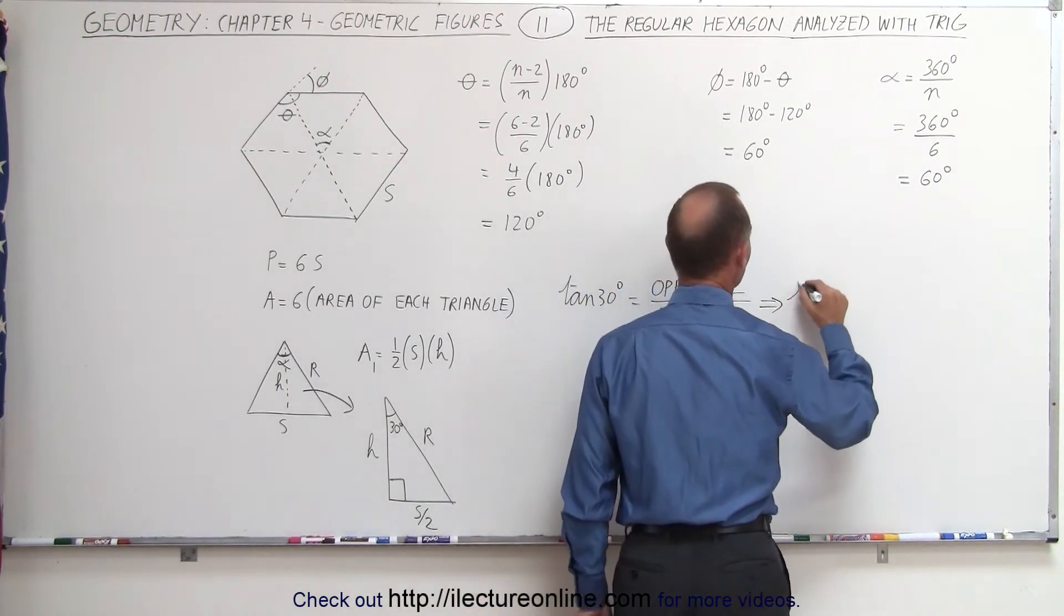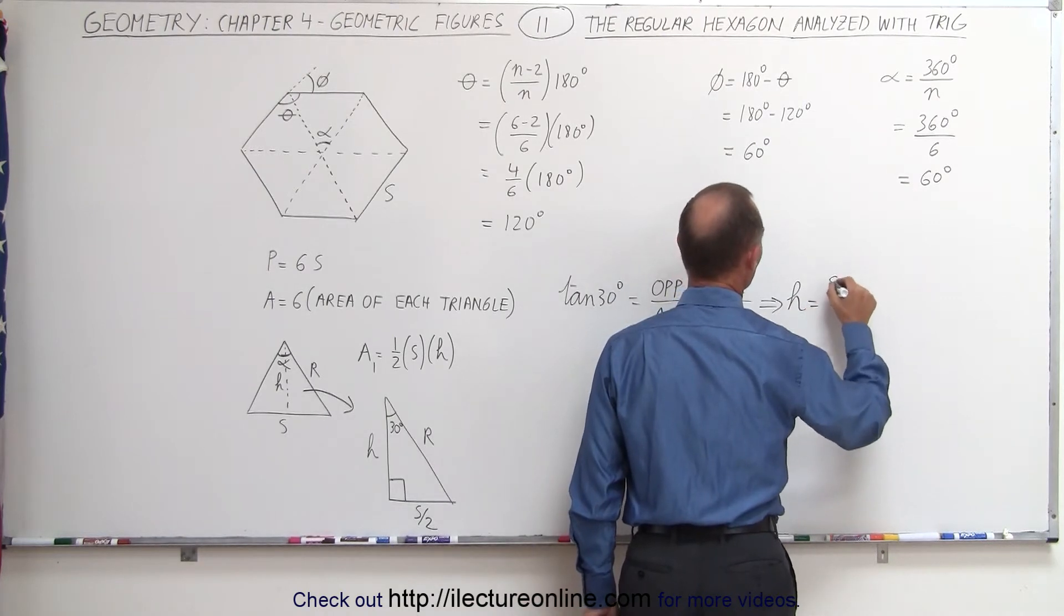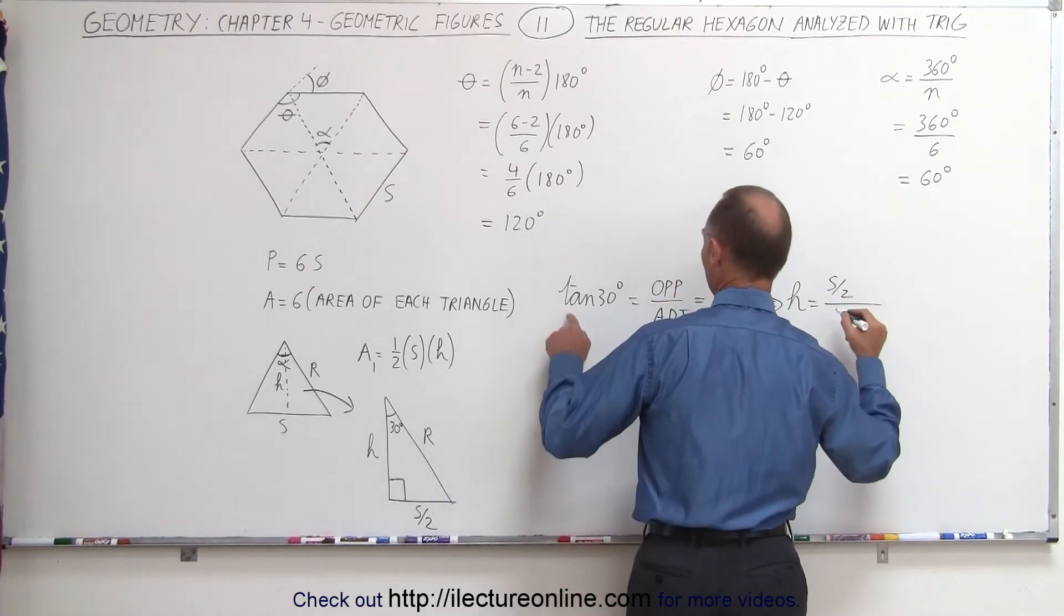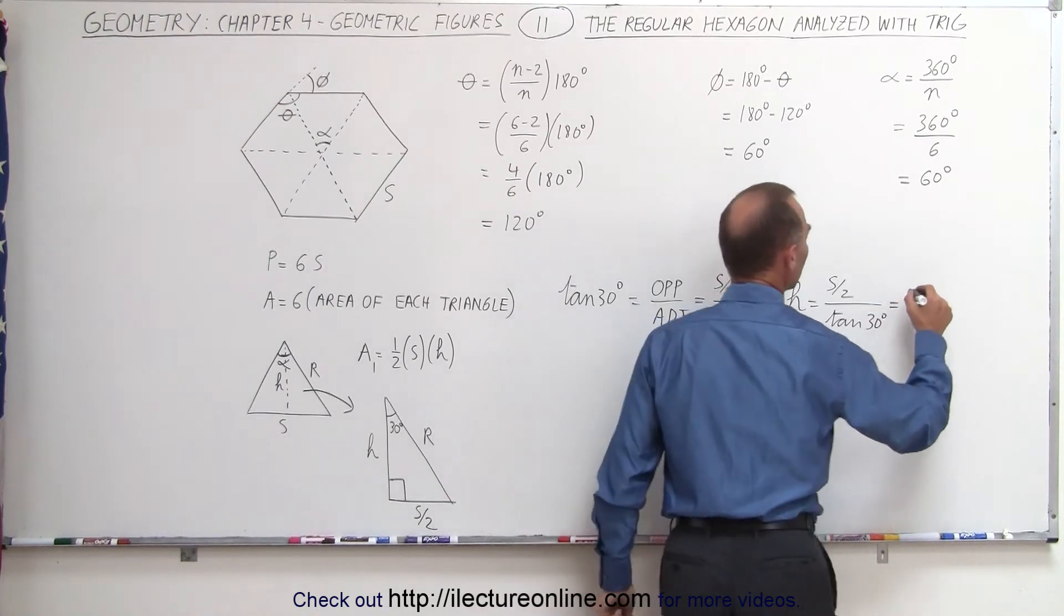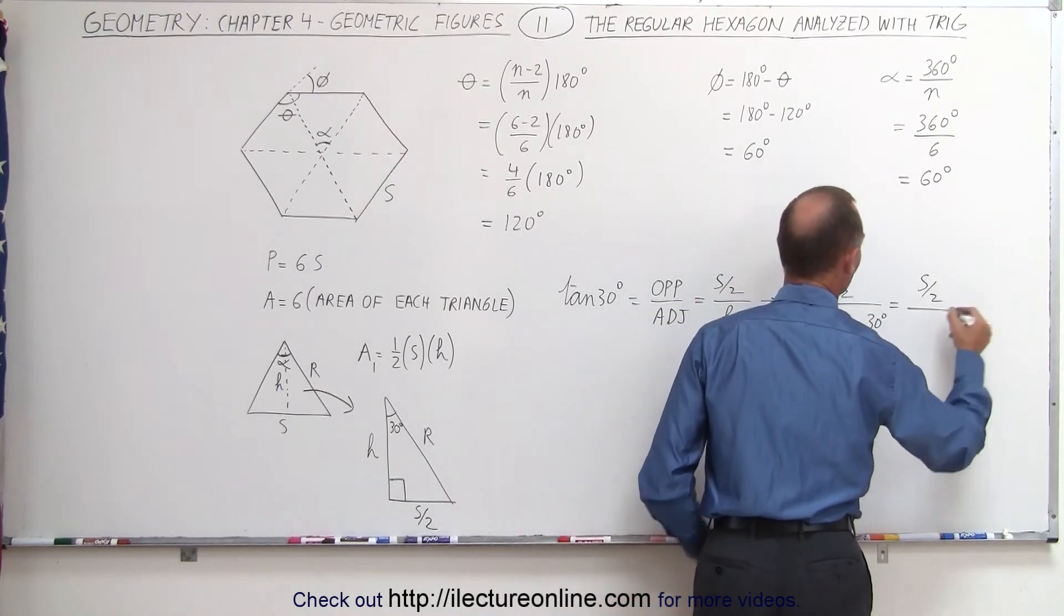We can define H as S divided by 2, divided by the tangent of 30 degrees.